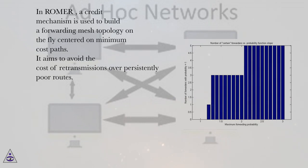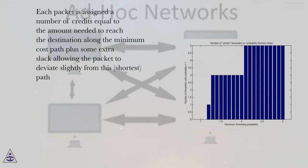In Roamer, a credit mechanism is used to build a forwarding mesh topology on the fly centered on minimum cost paths. It aims to avoid the cost of retransmissions over persistently poor routes. Each packet is assigned a number of credits equal to the amount needed to reach the destination along the minimum cost path plus some extra slack allowing the packet to deviate slightly from this path.